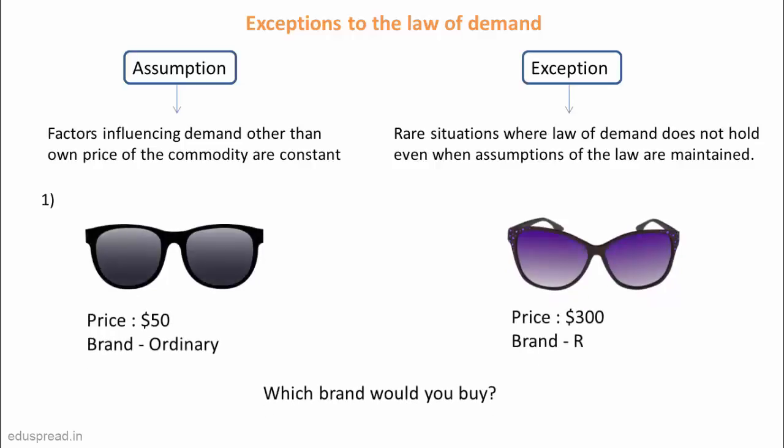Suppose that you want to buy sunglasses and you have shortlisted two of them. One is for $50 and this is an ordinary brand which is not so famous, and the other one is for $300. This is of brand R, which is a luxury brand, and say you know in advance that there is not much of a difference between the quality of these two. So, which one would you buy? Well, the answer to this question is not obvious. You may prefer the sunglasses that cost $50, but I am sure there are people who would want to buy the R brand sunglasses for $300.